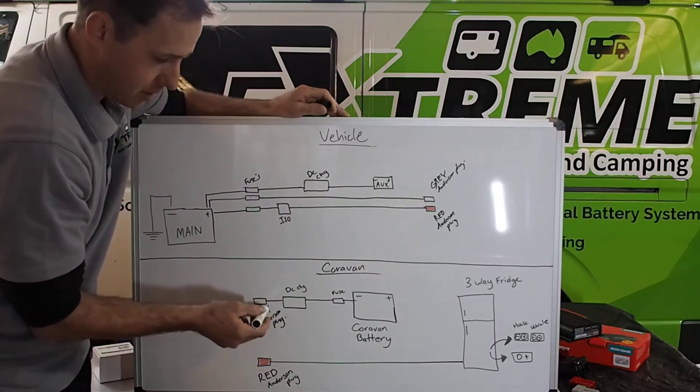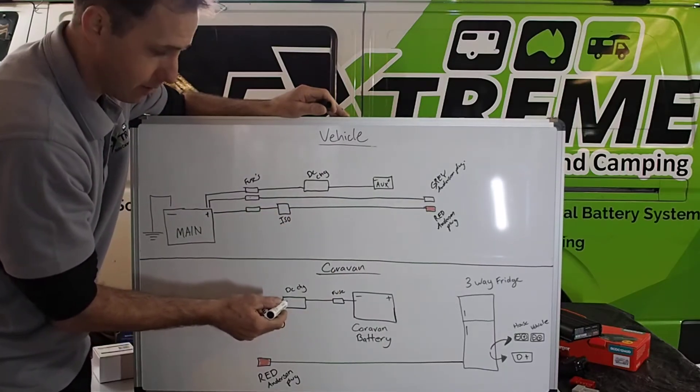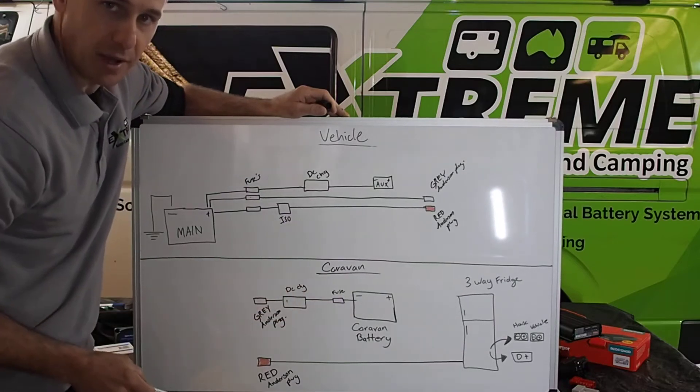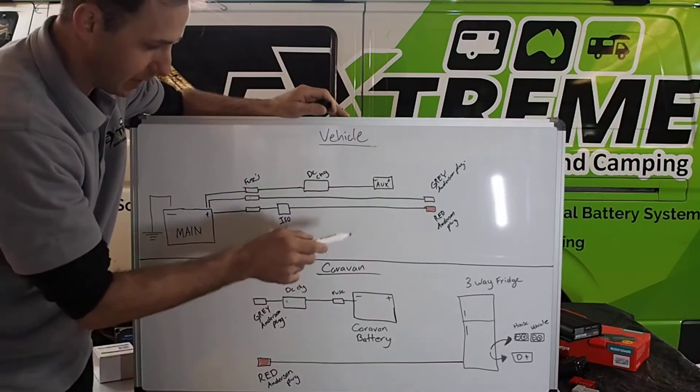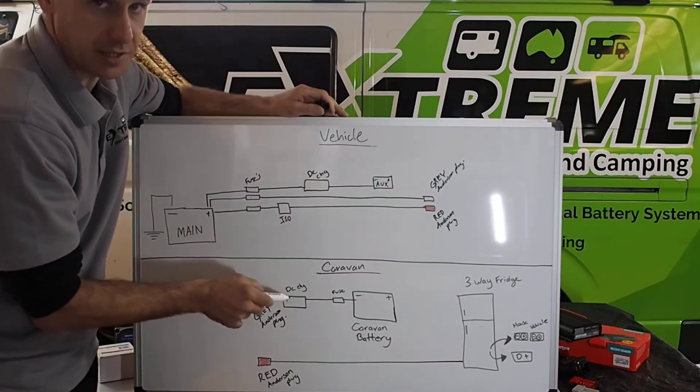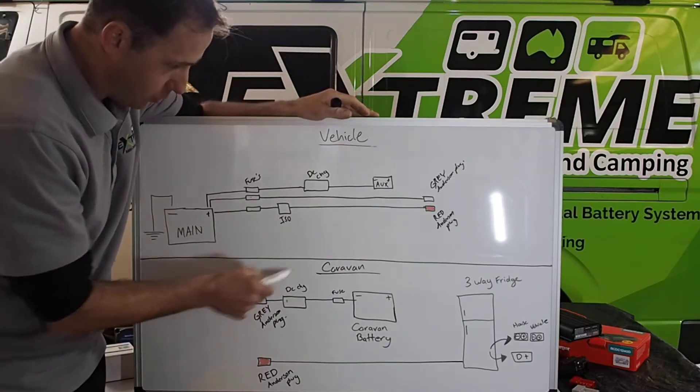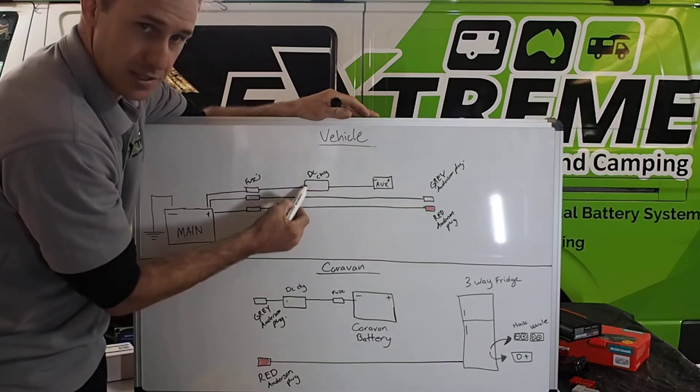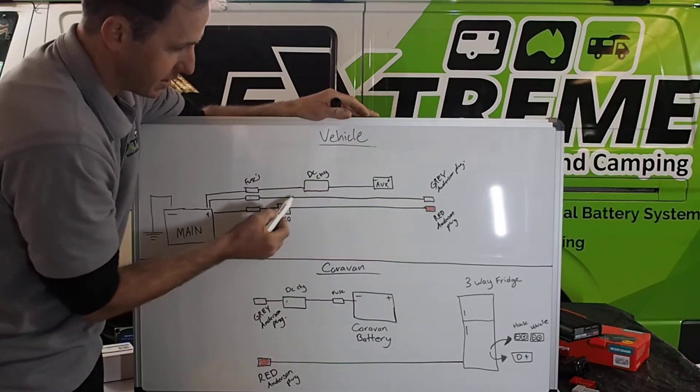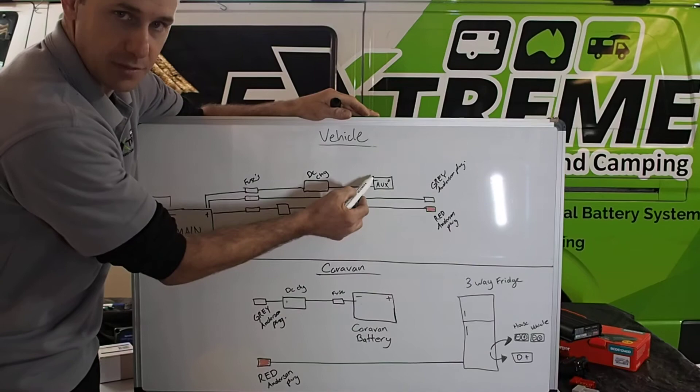That'll feed this DC charger, supply this with the necessary current to charge this battery bank absolutely perfectly. It's what is required from this DC charger. Read the book, it'll tell you all about it. So you are not pulling any power from this system from this line. It has nothing to do with this DC charger or this battery.